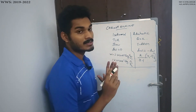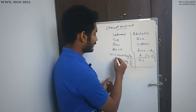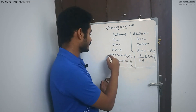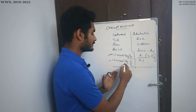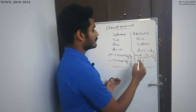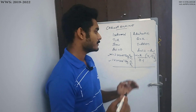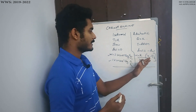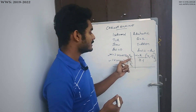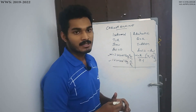In the isothermal process, the work done W is equal to 2.303 nRT log V2 by V1. Here, T1 and T2 are the initial and final temperatures, V1 and V2 are the initial and final volumes, and P1 and P2 are the initial and final pressures.